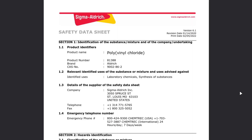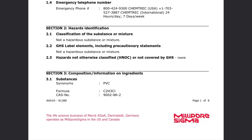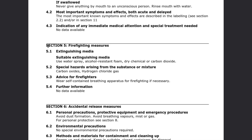SDS documents have 16 sections, but for laser users, we'll be focused on three specific sections. The first is Section 2, Hazards Identification. This section gives you the overall danger labels — things like whether the material is toxic, corrosive, or flammable. It's the quick snapshot of how dangerous the chemical is considered to be. The second is Section 5, Firefighting Measures. This might sound like it only matters to firefighters, but it's actually really important for us too. Section 5 usually lists the gases that are released when the material burns in a fire — and if those gases come off in a fire, they're also going to come off when the material is burned in your laser.